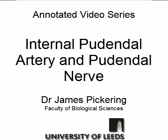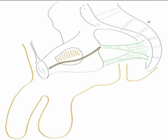Welcome to this annotated anatomy video that will outline the branches of the internal pudendal artery and the pudendal nerve. On the screen we have a hemisected pelvis, where anteriorly we have the pubic symphysis, the superior pubic rami, the inferior pubic rami, the ischial tuberosity and the ischial spine, and their respective ligaments — the sacrospinous ligament and the sacrotuberous ligament — running towards the sacrum.